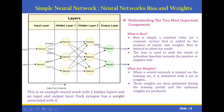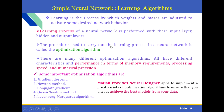This is the concept of bias and weights. These are input neurons, hidden layer 1, hidden layer 2, and the output layer. Bias is simply a constant value or a constant vector that is added to the product of your input and weights. Bias is used to offset the result of the activation function towards the positive or negative side. Weights are initialized randomly when the neural network is trained on a training set, then optimized during the training period to produce optimum weights. Learning is the process by which weights and biases are adjusted to activate some desired network behavior.